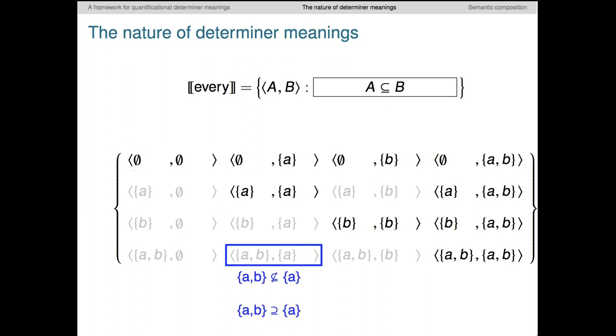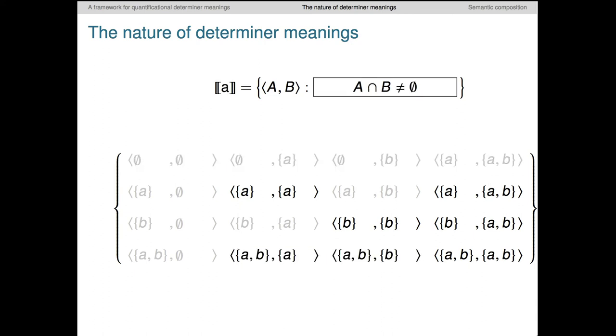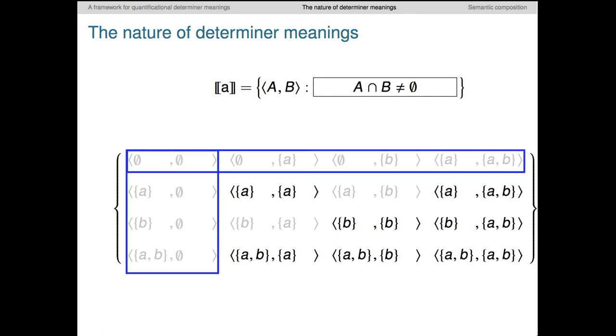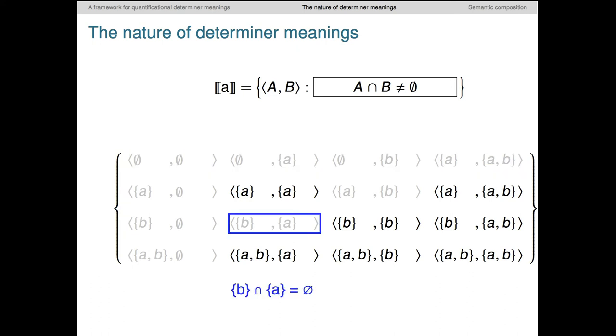But for example, this lower left cell here disappeared because the set containing A and B is a superset of the set containing only A, whereas every demands the subset relation. Here's determiner A. It removes all the cases where the two sets have an empty intersection. So the first row and the first column are gone because of the empty set. And pairs like the set containing only A and the set containing only B also disappear because they have an empty intersection.